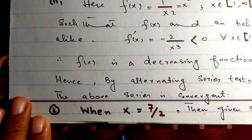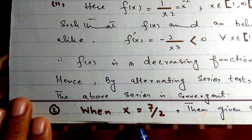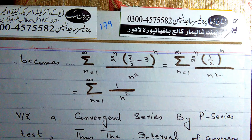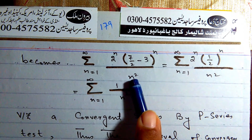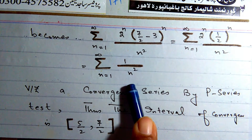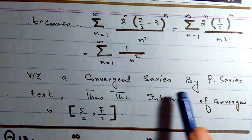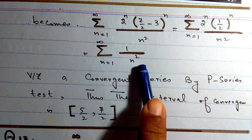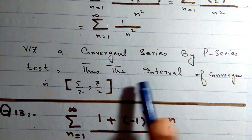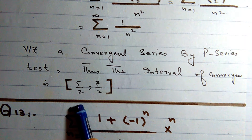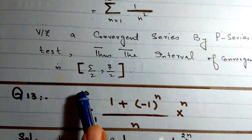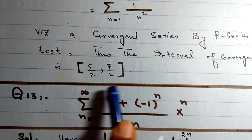At x = 7/2, substituting into the given series gives summation 1/n², which is convergent by the p-series test since p = 2 > 1. Since both endpoints converge, the interval of convergence is the closed interval [5/2, 7/2].